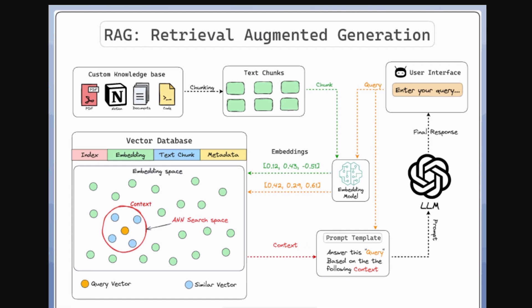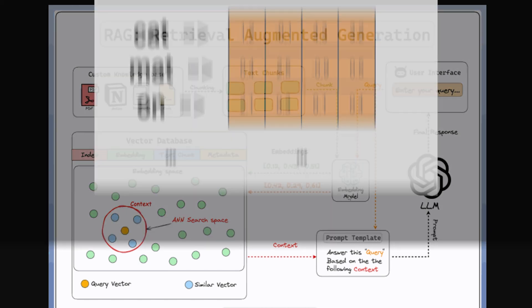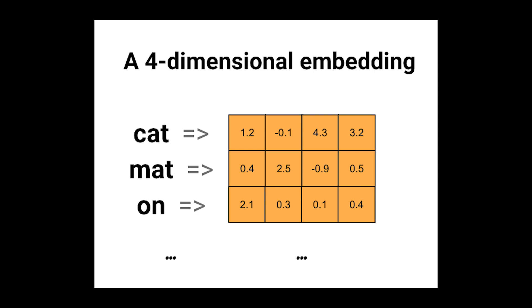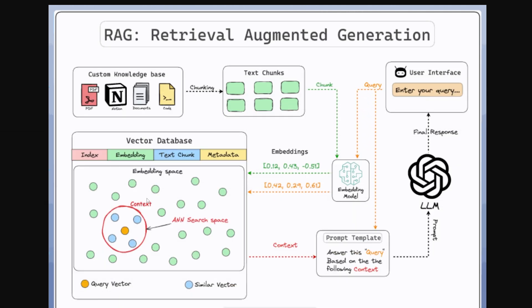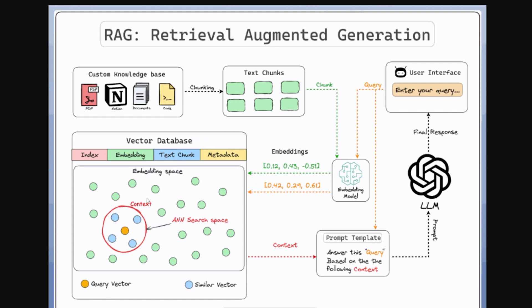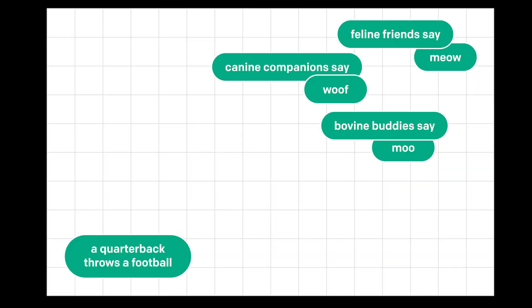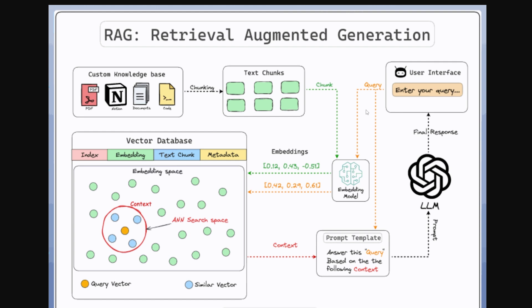This custom knowledge base can be a PDF, a Notion page, an API, documentation, code, or in today's case, articles from the internet. We take this knowledge base, cut it into smaller chunks, then pass it to an embeddings model — in our case the OpenAI API — which turns each chunk into a set of numbers. We store all these numbers inside a vector database. Unlike a regular database that stores text and numbers, a vector database is dedicated to embedding storage and supports similarity vector search. When a user asks a question, we query the database, get the most similar results, pass them back to our model, rephrase or refine the answer, and send the final response to the user. That's basically how RAG works.